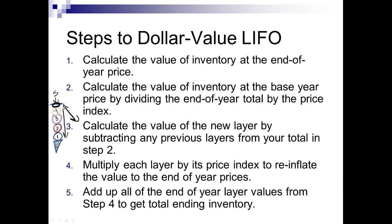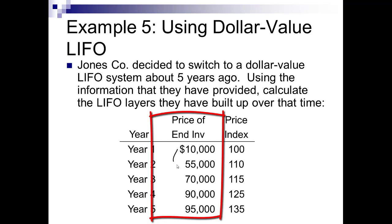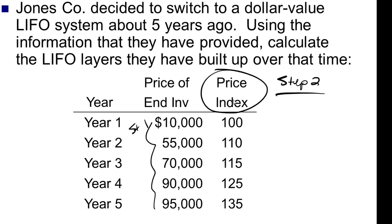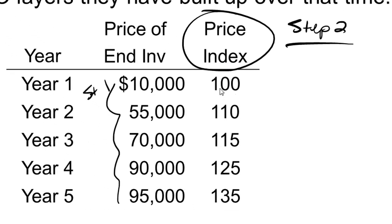Let's take a look at an example. With this table, I've done step one for you. These are the end of year prices. This is what I would have paid for all of my inventory if I had purchased it at the end of these years. Step two is to divide by the price index. Remember, a price index we call 100, 110, 115, but it's really 1.0, 1.1, 1.15, etc. So to get to step two, we're going to divide. 10,000 divided by 1 is still 10,000. 55,000 divided by 1.1 is 50,000.